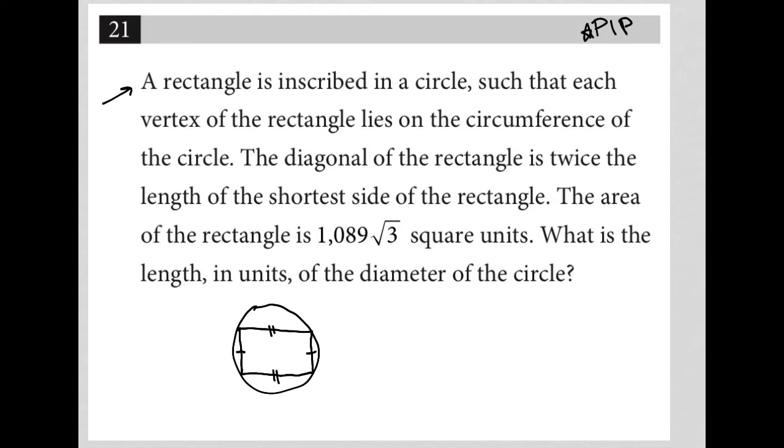A rectangle is inscribed in a circle such that each vertex of the rectangle lies on the circumference of the circle. The diagonal of the rectangle is twice the length of the shortest side of the rectangle.